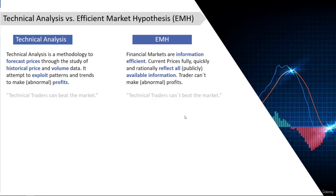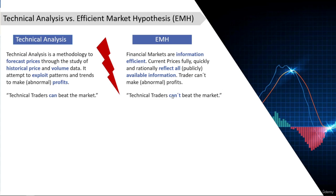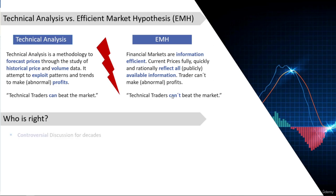As a consequence of EMH, traders can't make abnormal profits with TA or fundamental analysis, because all prices reflect the intrinsic fair value. There are no underpriced or overpriced securities, and prices follow a random walk uninfluenced by past price patterns. To summarize: TA claims traders can beat the market; EMH claims they can't. They are contradictory, and EMH clearly disputes the usefulness of technical analysis. Empirical studies show mixed results, so there's no clear winner.